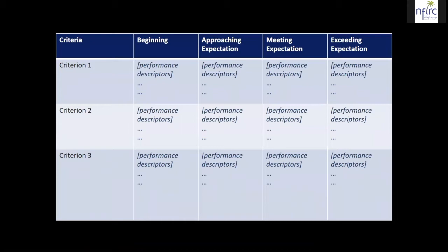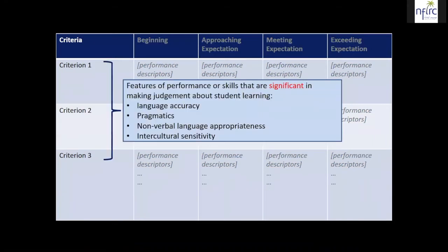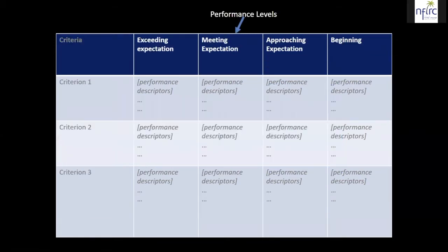So it looks something like this — a very generic matrix. On the left-hand side, you can see different judgment criteria. Those represent features of performance or skills that are significant in making judgments about student learning — for example, language accuracy, pragmatics usage, non-verbal language appropriateness, intercultural sensitivity or competency, and so on. At the top, the column headers describe different performance levels: from beginning to approaching expectation, meeting expectation, exceeding expectation, and so on. You can change these headers to your liking.